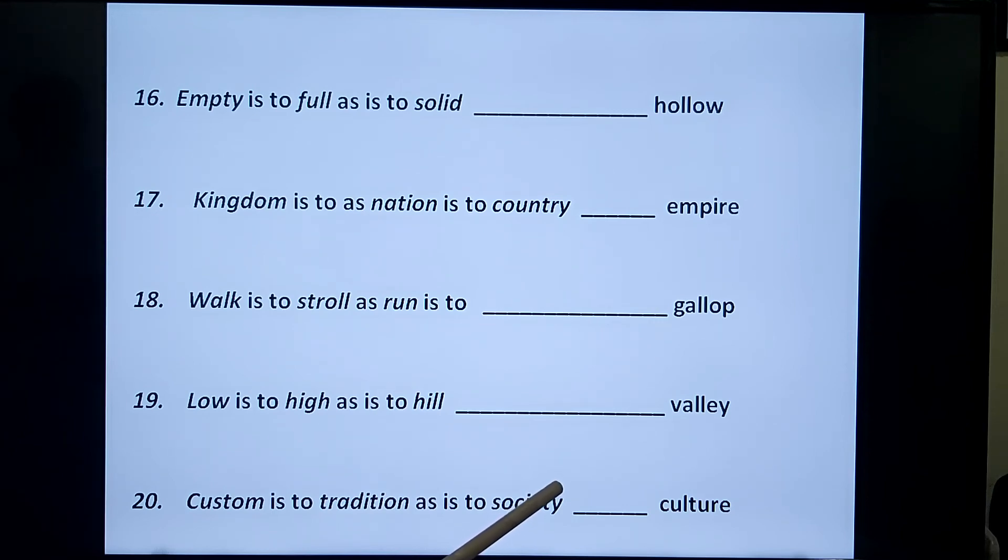Eighteen: walk is to stroll as run is to gallop. I repeat it again, number eighteen, walk is to stroll as run is to gallop. Gallop is running fastly. In walking and stroll, they have similarity, kind of walking or going in a medium pace or slow, while run and gallop have a similarity in being quick.